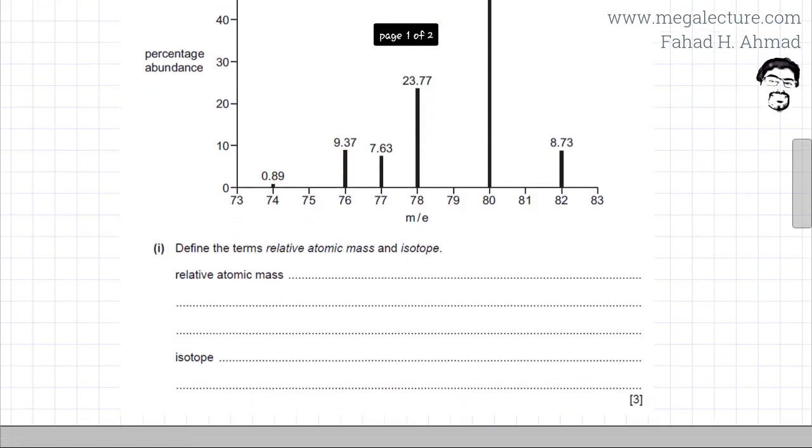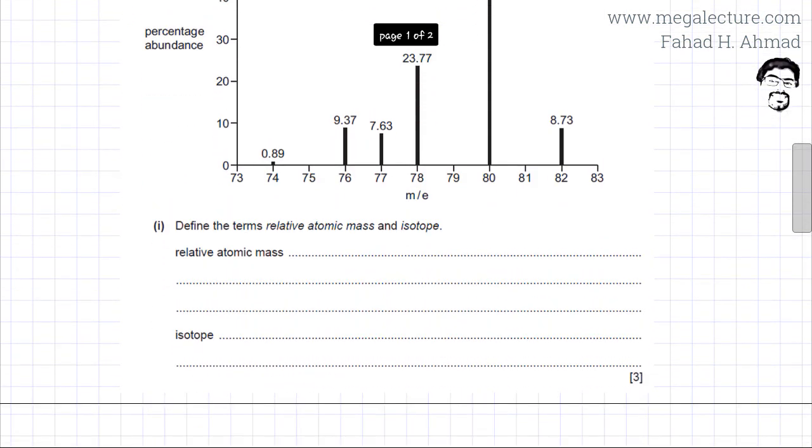So the mass spectrum is given and the first part of the question wants you to write down the definition, define the terms relative atomic mass and isotope. So we need to define what relative atomic mass is and what is the definition of an isotope.